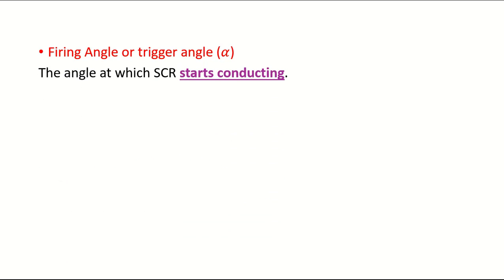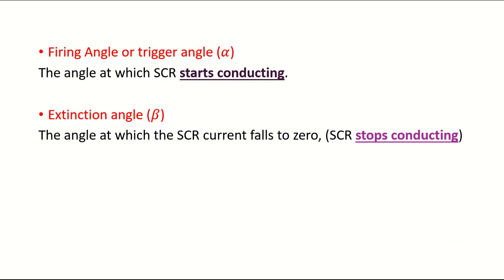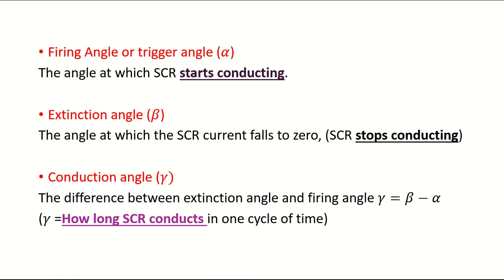Firing angle is the angle at which thyristor starts conducting, while extinction angle is the angle at which the thyristor stops conducting. Conduction angle is the difference between extinction angle and firing angle. Conduction angle refers to how long thyristor conducts.